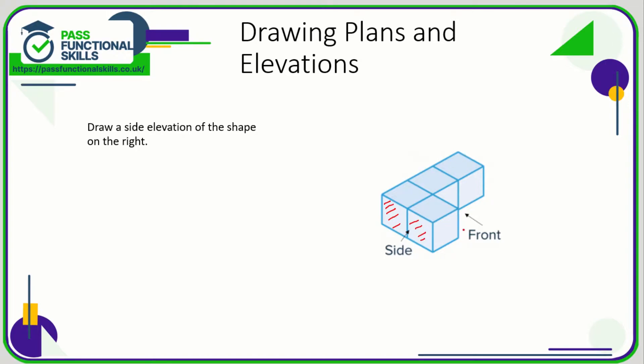The side elevation: all we are seeing is the side, so that is this square and this square. We will not see the top or the front or the back. All we will see is two squares next to each other. The side elevation will look like this.